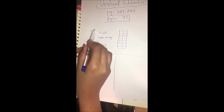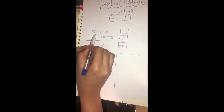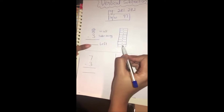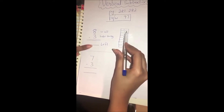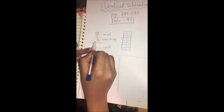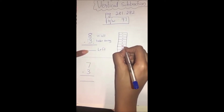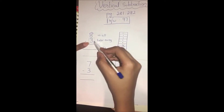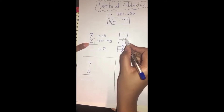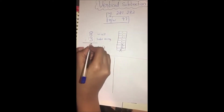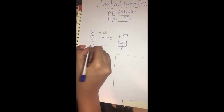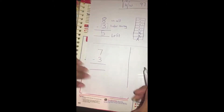8 minus 3. In all, how many are there? 8. Let's count: 1, 2, 3, 4, 5, 6, 7, 8. How many are we going to take away? 3. Let's take away 3: 1, 2, 3. How many left? 1, 2, 3, 4, 5. Exactly 5.